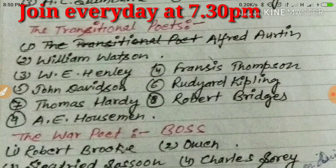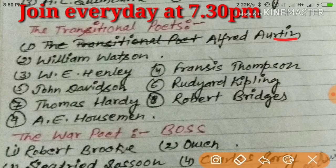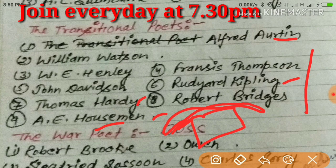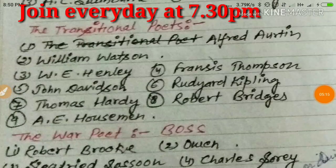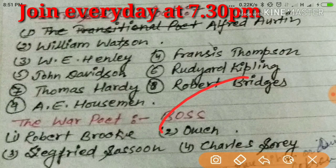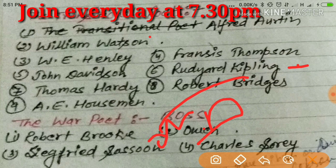For the transitional poets: Auden was there, Kipling was there, and Hardy and Housman — they were making the house. You need to read the actual names of the poets first; this trick only works when you already know the names but forget which group they belong to. So: Thompson, Davidson, and Henley broke the bridge; Watson and Kipling were making it.